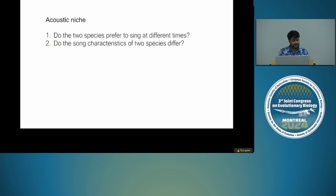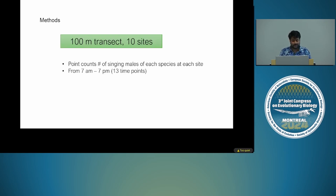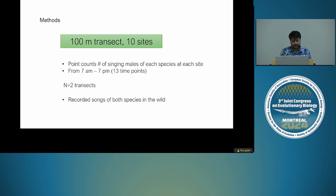Next, I looked at the acoustic niche to understand whether the two species prefer to sing at different times and whether sound characteristics are the same or different. I chose 200-meter transects with 10 sites each, did point counts of singing males of each species from 7 a.m. to 7 p.m. for a total of 13 time points across two separate transects. I also recorded songs of both species in the wild and analyzed them for different song characteristics.